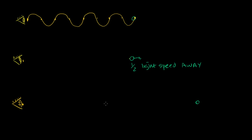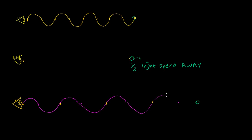Let me draw four full wavelengths — each of these are going to be a full wavelength with a half wavelength in between. So the waveform is going to look stretched out like this. When it gets to my eye, my eye is going to perceive it as having a longer wavelength. Even though from the perspective of each of these objects — if you're traveling with each of them — the frequency and wavelength of the light emitted is the same.